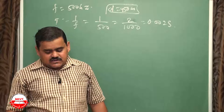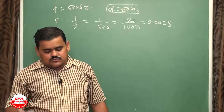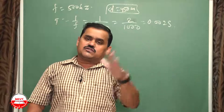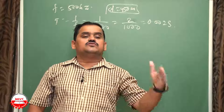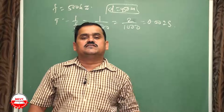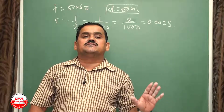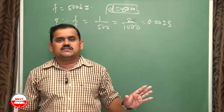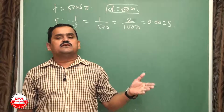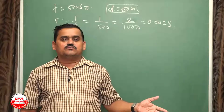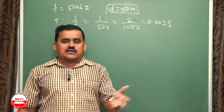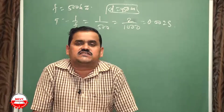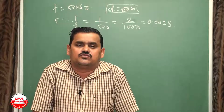Next question: state a condition for an echo to be heard. There must be an obstacle, a source of sound, and the distance between the source and the obstacle must be more than 17.2 meters at 25°C. If the temperature is above 25°C, you calculate using 2d = Vt.